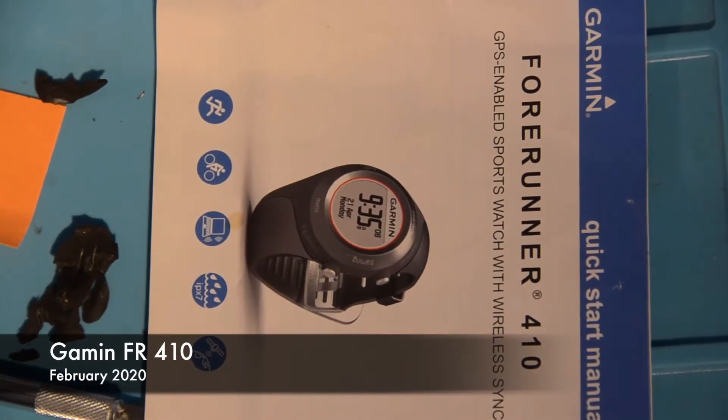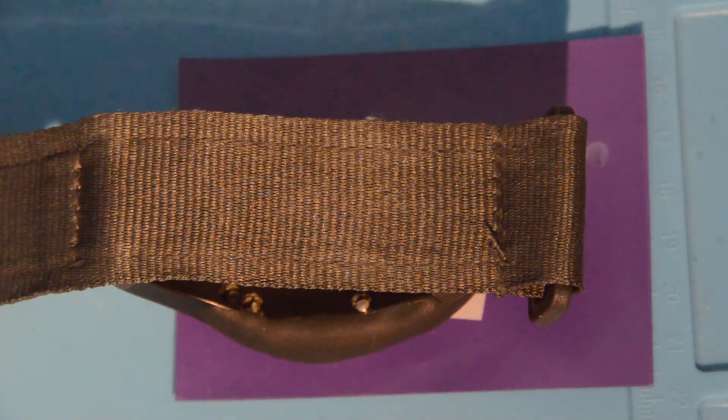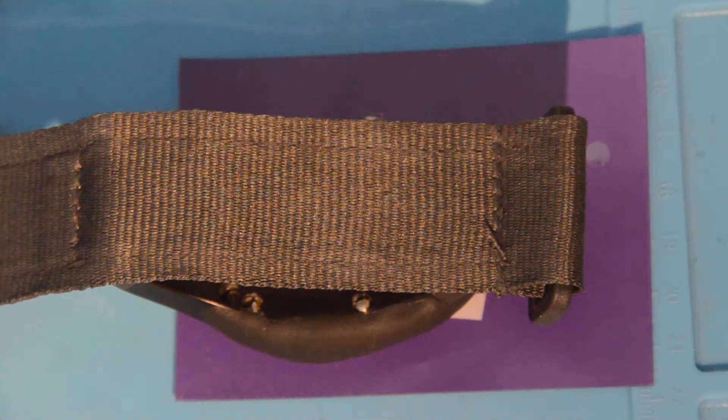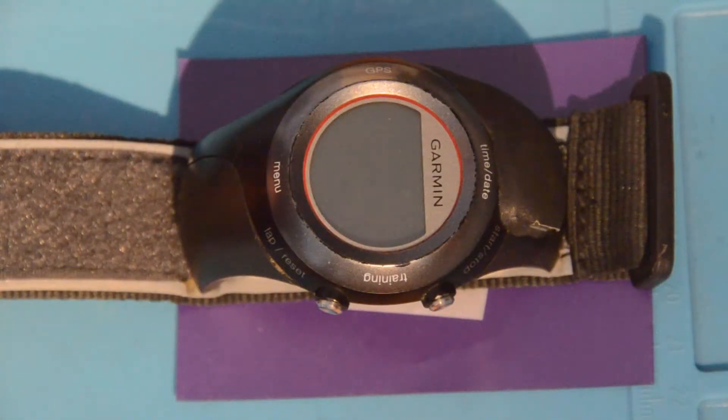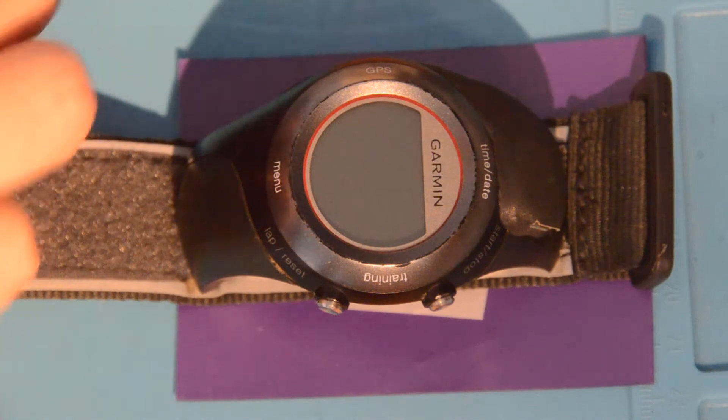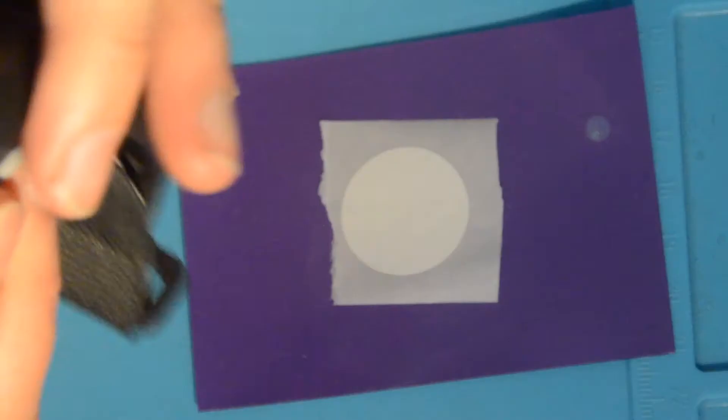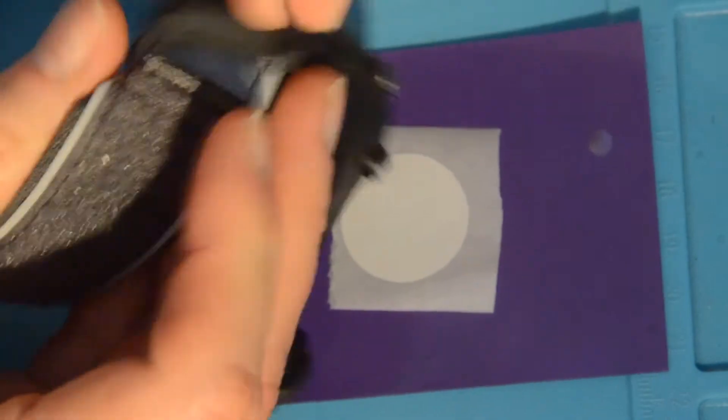My Garmin Forerunner 410 has reached the end of its useful life. I got it at least second hand from a triathlete who couldn't stand the capacitive bezel, and I have to agree it's not the best. So it's time to see what's inside, whether we can replace the battery and what with, and have a look at the general design.